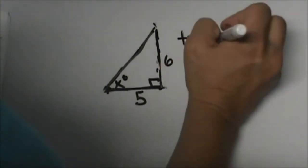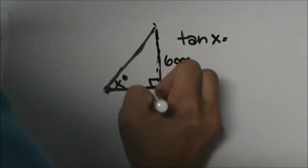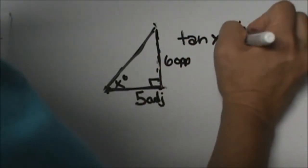Tangent of x is equal to opposite over adjacent. So 6 over 5.